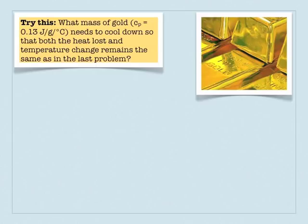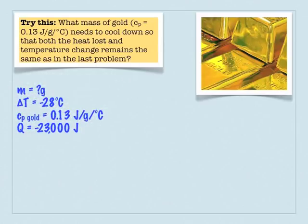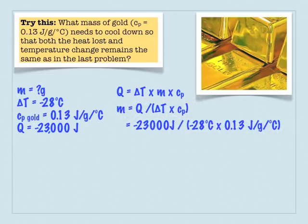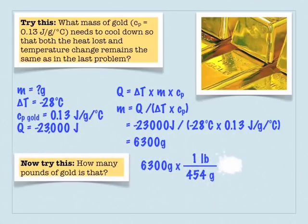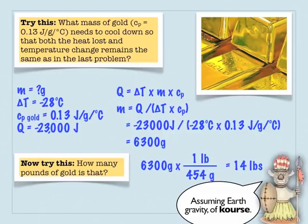A contrived follow-up problem: given that same temperature change and heat change, let's swap out the water with gold. How much gold would you need to release the same amount of heat? Conceptually, gold's specific heat is very low — 0.13 joules per gram per degree Celsius — so you'd need more gold. Solving for mass gives us about 6,300 grams of gold, which is roughly 14 pounds. This illustrates just how fantastically high water's specific heat really is.